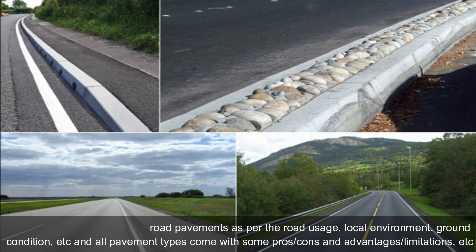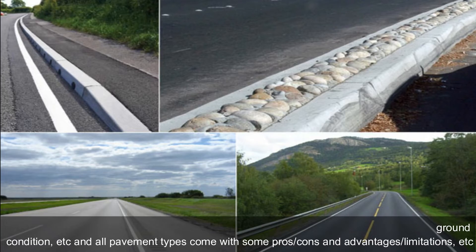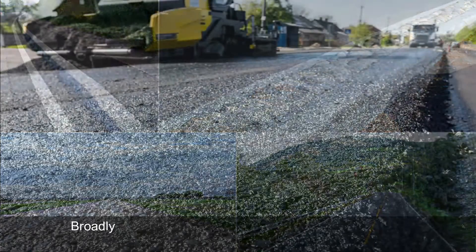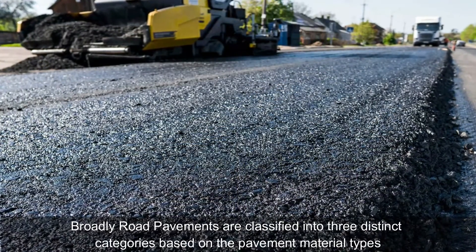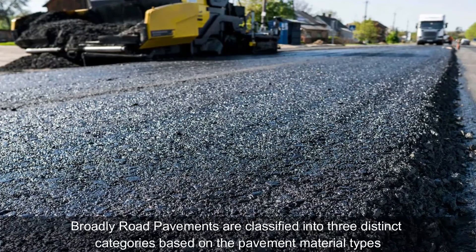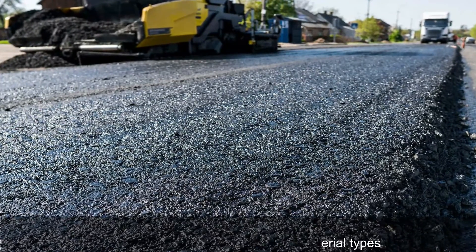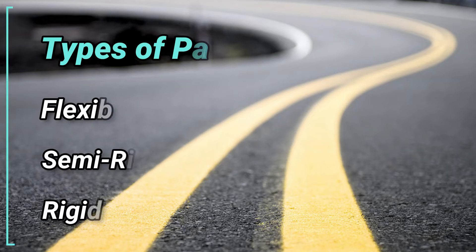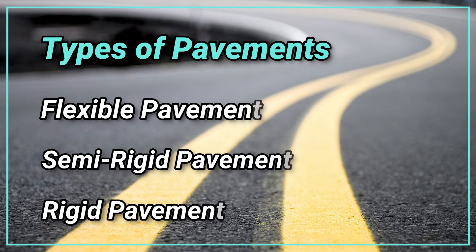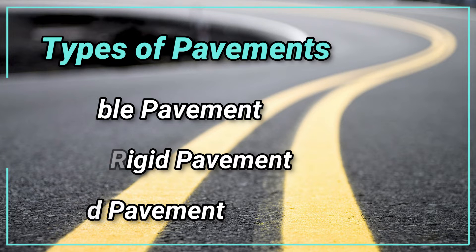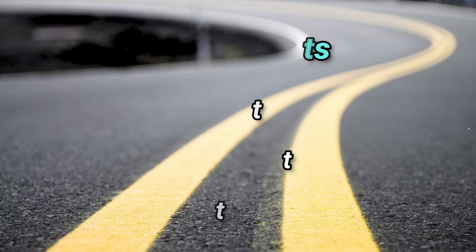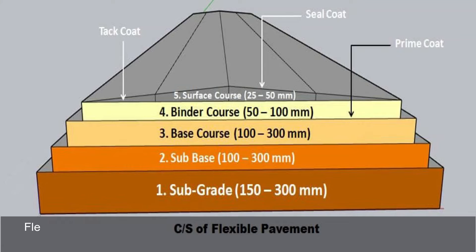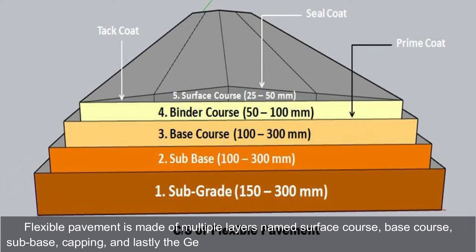There are numerous types of road pavements depending on road usage, local environment, ground conditions, etc. All pavement types come with pros, cons, and limitations. Broadly, road pavements are classified into three distinct categories based on pavement material types: flexible pavement, semi-rigid pavement, and rigid pavement.